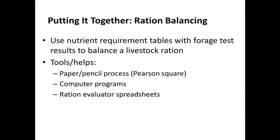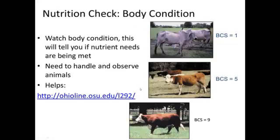As we put it all together, we have to use nutrient requirement tables combined with our forage test results to balance a livestock ration. A forage test in and of itself gives us useful information, but to really utilize it fully, we have to put that into a ration and see how it matches up with the requirements of our livestock. There are a number of tools that can help — things like a Pearson Square, a computer program, or some good ration evaluator spreadsheets.